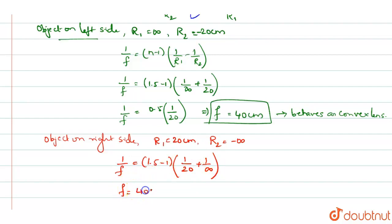So F once again is 40 cm. You get 1/F = 0.5 × 1/20, which is the same result. F = 40 cm, and again it behaves as a convex lens.